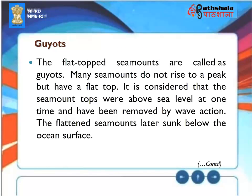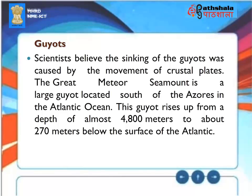Guyots: The flat-topped sea mounts are called guyots. Many sea mounts do not rise to a peak but have a flat top, considered to have once been above sea level and removed by wave action, before sinking below the ocean surface. Scientists believe the sinking of guyots was caused by the movement of crustal plates. The Great Meteor sea mount is a large guyot located south of the Azores, rising from a depth of almost 4,800 meters to about 270 meters below the surface of the Atlantic.